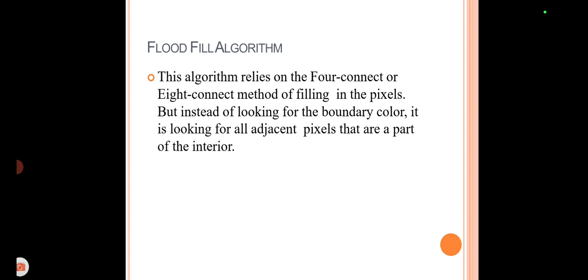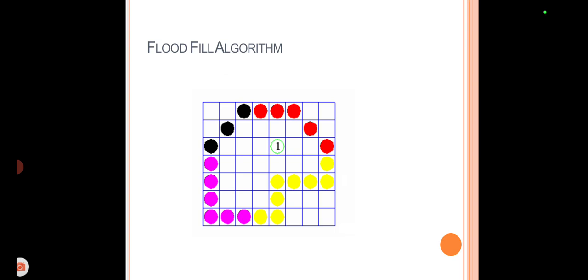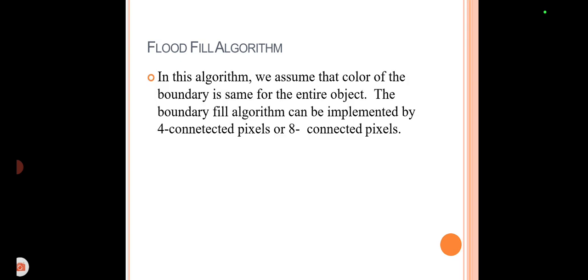The flood fill algorithm works with four-connected and eight-connected methods of filling pixels, but instead of looking for the boundary color, it looks for all adjacent pixels that are part of the interior. As shown in the figure, color dots show the boundary region of a polygon. Inside that, pixel value 1 indicates a pixel lying inside the polygon, and using either four-connected or eight-connected manner, it will fill the full polygon.